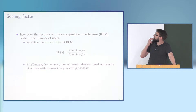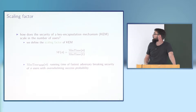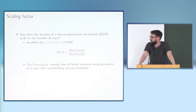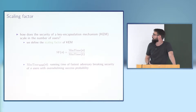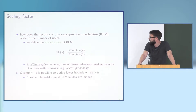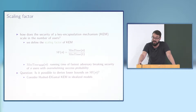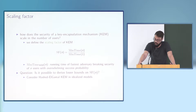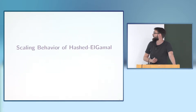We try to quantify the scaling behavior via a scaling factor, which is the fraction of the fastest time to break n instances of the scheme compared to the fastest time to break one instance. In this talk I focus on adversaries achieving overwhelming success probability, though we cover more general settings in the paper. We consider hashed ElGamal in idealized models—the random oracle model and the generic group model—and ask whether it is possible to derive lower bounds on this scaling factor.